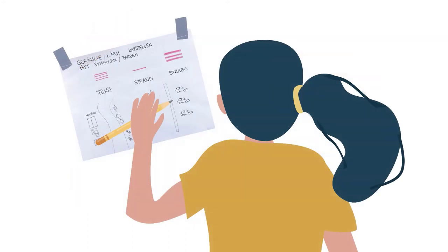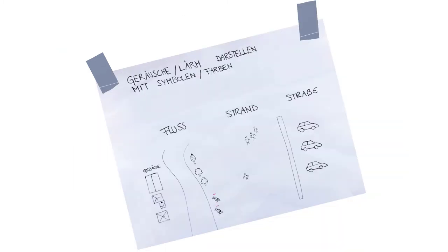Car noise is very noticeable here. You can hardly hear the river at all. I'm going to add crossbars for all noise sources to your sketch. The more crossbars, the louder the noise.